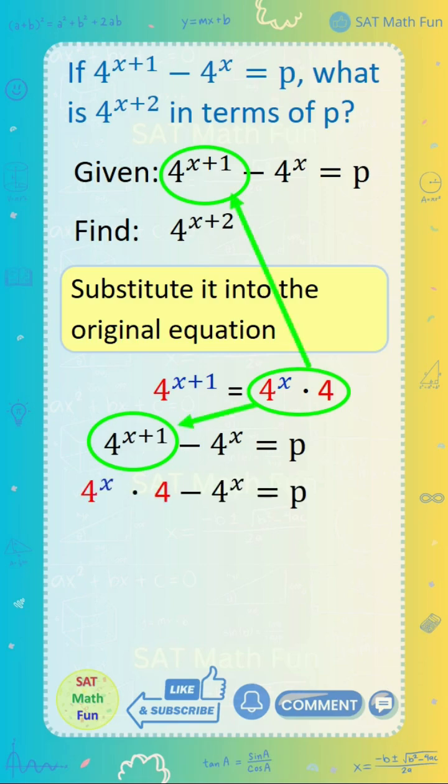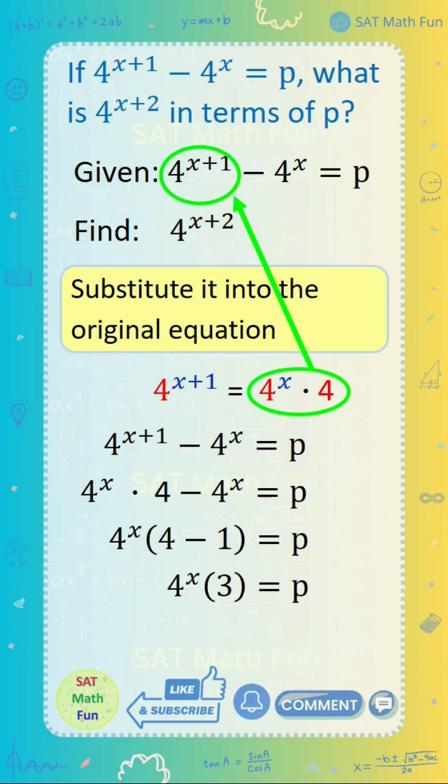Notice that 4 to the power of x is common in both terms so we can factor it out and get 4 to the power of x times 4 minus 1 equals p. 4 minus 1 is 3. Divide both sides by 3 and we get 4 to the power of x equals p over 3.